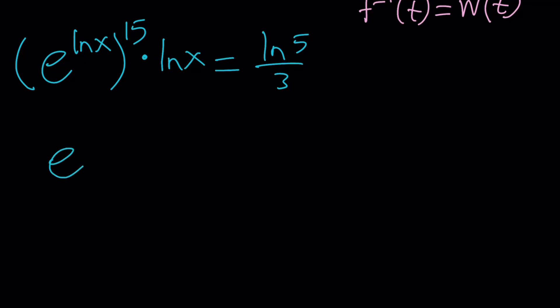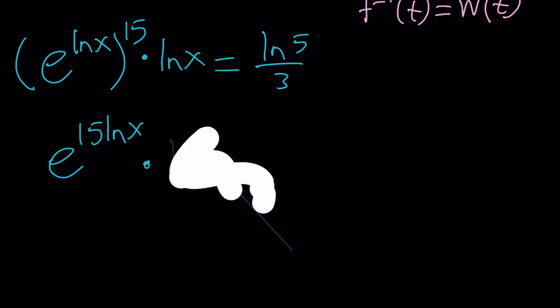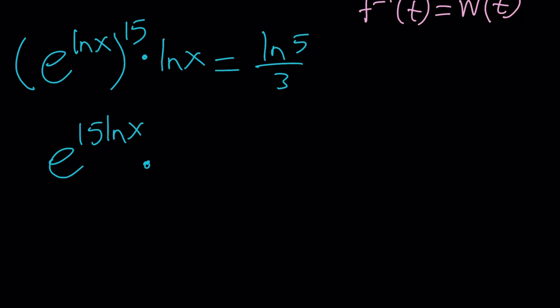And now we have e to the power 15 ln x, multiply by ln x. I don't know why that's happening. Sometimes notability is going to act crazy. But if you multiply that by ln x, it's still going to be the right-hand side, right?